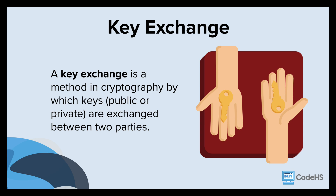Asymmetric encryption utilizes two different keys — one to encrypt the data and the other to decrypt the data. One key is shared publicly and the other is kept private.